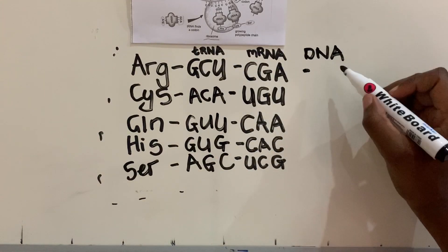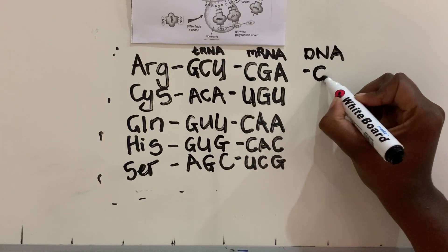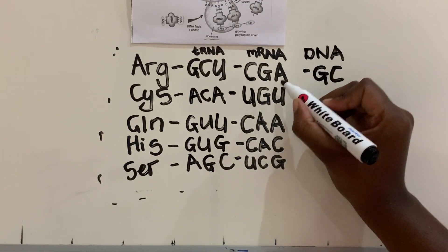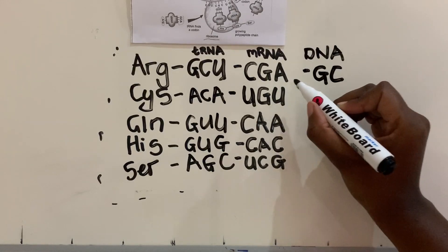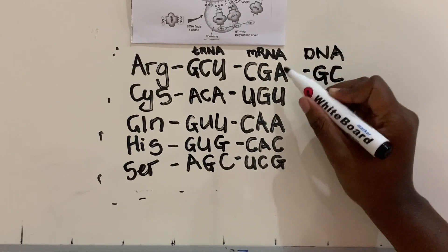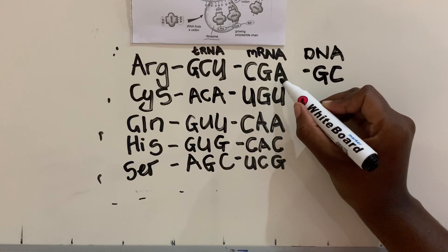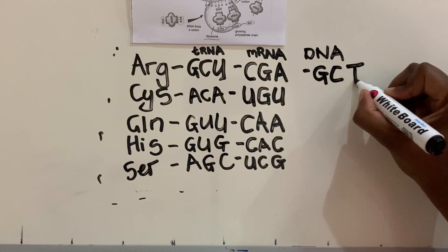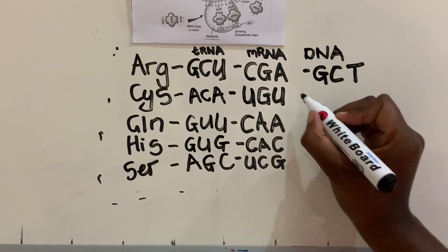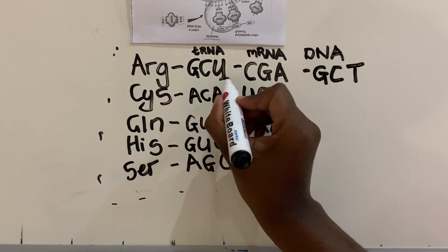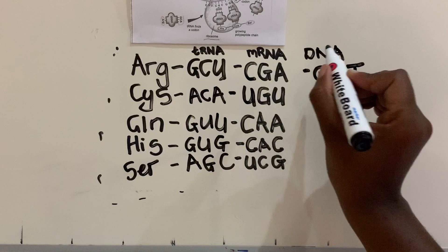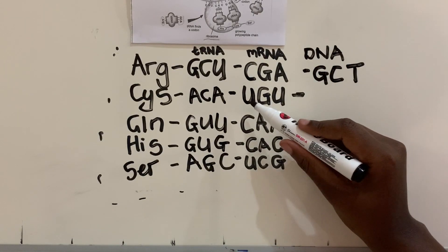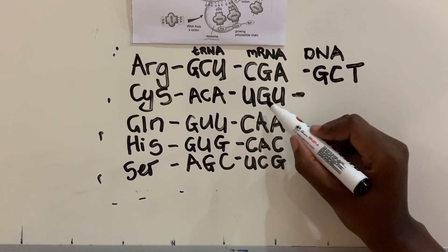And then we go from mRNA to DNA. Some of them are going to be the same, but that's okay. C is G, G is C, and A—so in DNA, adenine bonds with thymine—so it's going to be ATG, CTG instead of GCU because there's no uracil in DNA.